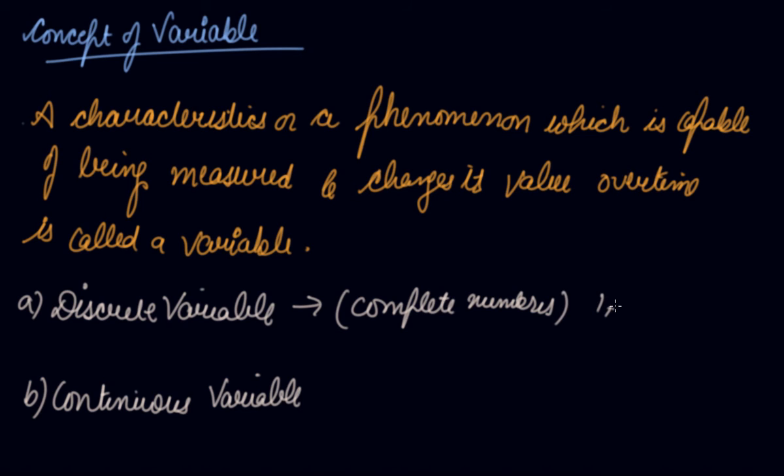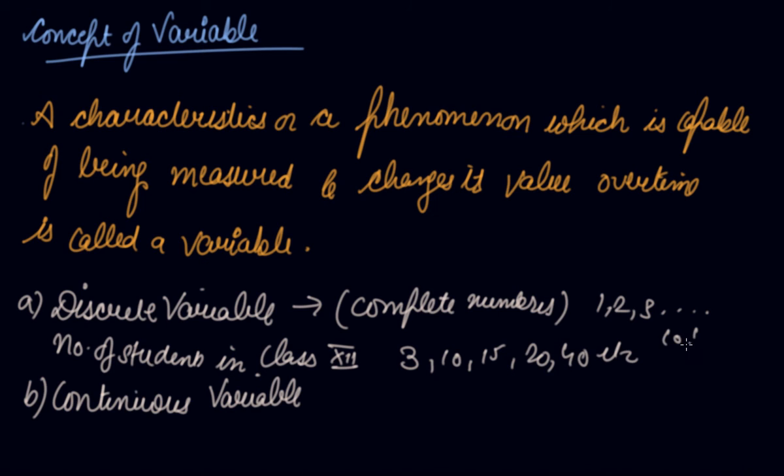Let's say one, two, three - the complete whole numbers. Let's say the number of students in class 12. How many students are there in class 12? It would be 3, 10, 15, 20, or 40. So you cannot express students in ten and a half or 10.5. A student cannot be a half.